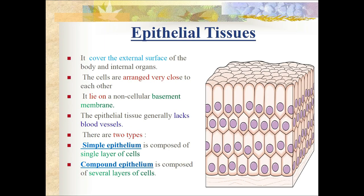The first one is epithelial tissue. Epithelium means covering - it covers the external surface of the body and also internal organs. The cells are arranged very close to each other without leaving any intercellular space. They lie on non-cellular basement membranes, and the epithelial tissue lacks blood vessels.